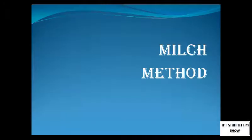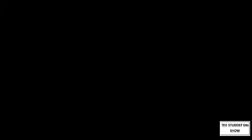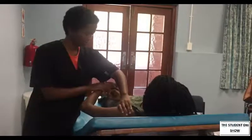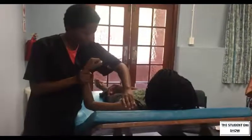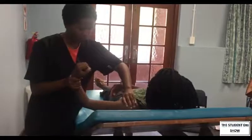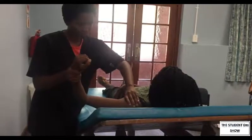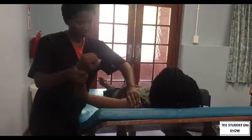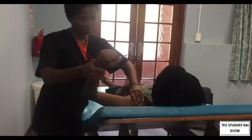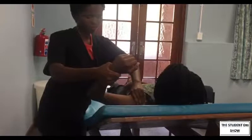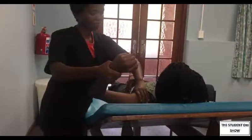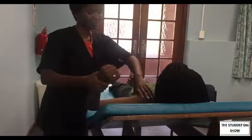The Milch method. The elbow is kept flexed at 90 degrees in order to relax the biceps muscle. The doctor performing the procedure places their left hand over the shoulder with their thumb in the axilla. Gentle traction is applied with the hand while pulling the elbow at 45 degrees abduction. While slowly abducting the elbow, the humerus is externally rotated. The head of the humerus should then relocate into the glenoid.